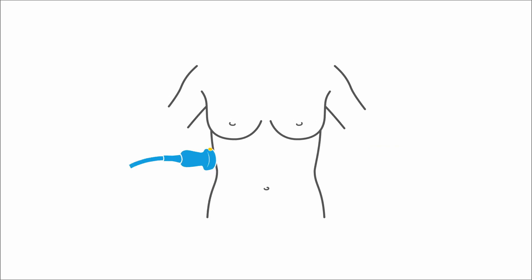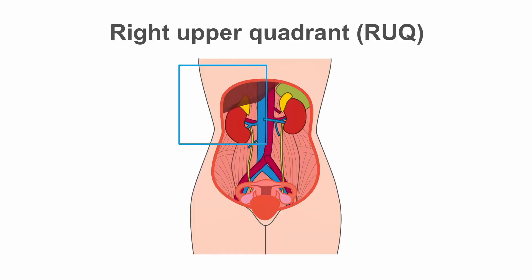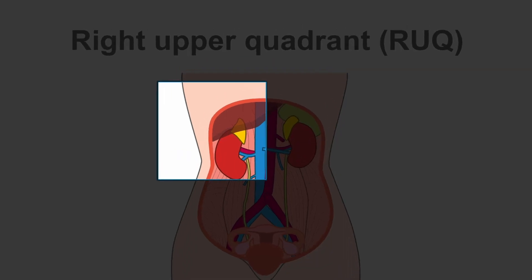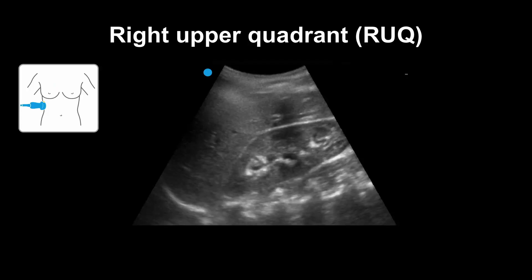Here is where you typically apply the probe to get a coronal view of the right upper quadrant looking for fluid — it's the mid-axillary line in the 7th to 9th intercostal space. As a reminder, this is what the normal right upper quadrant looks like. Here you can see the liver and the kidney, and here is what the same anatomy looks like on ultrasound.